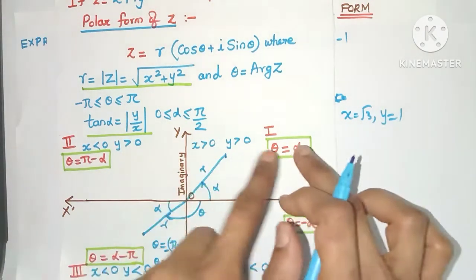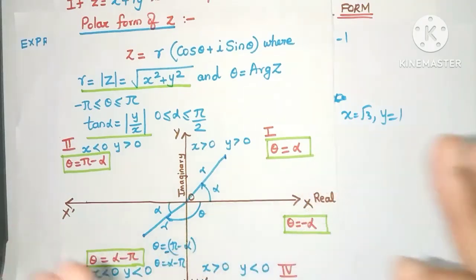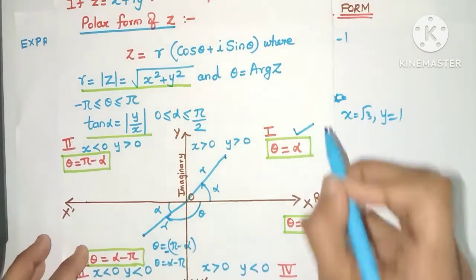So this will be my r and this will be my alpha. So in the first quadrant the theta or the argument will be the same as alpha. So remember this point.